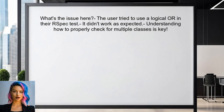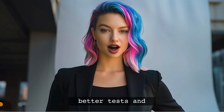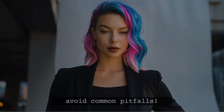So what's the issue here? The user tried to use a logical OR in their RSpec test, but it didn't work as expected. This is a common mistake, and understanding how to properly check for multiple classes is key to writing effective tests. At the end of this video, I'll share a pro tip that will help you write better tests and avoid common pitfalls.